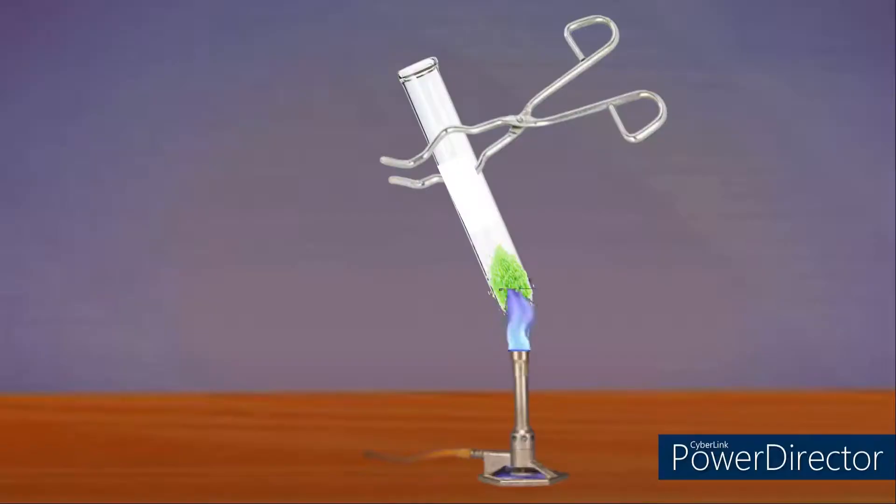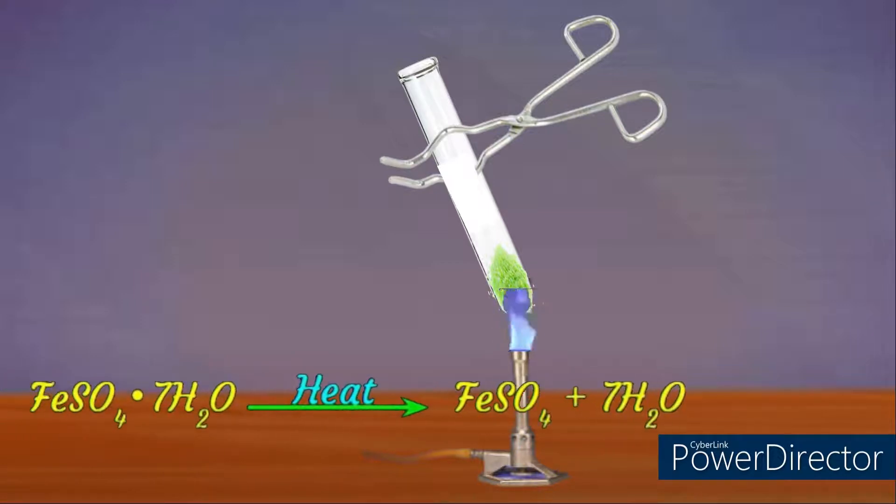For example, take a dry test tube and add a few green color crystals of hydrated ferrous sulfate. On heating, it first loses water to form anhydrous ferrous sulfate. The equation for this is FeSO4·7H2O gives rise to FeSO4 plus 7H2O in the presence of heat.